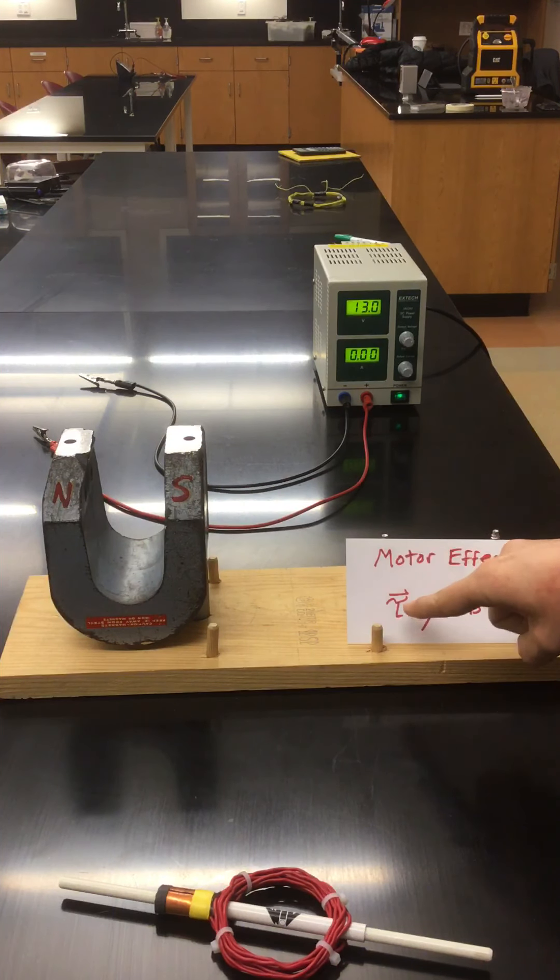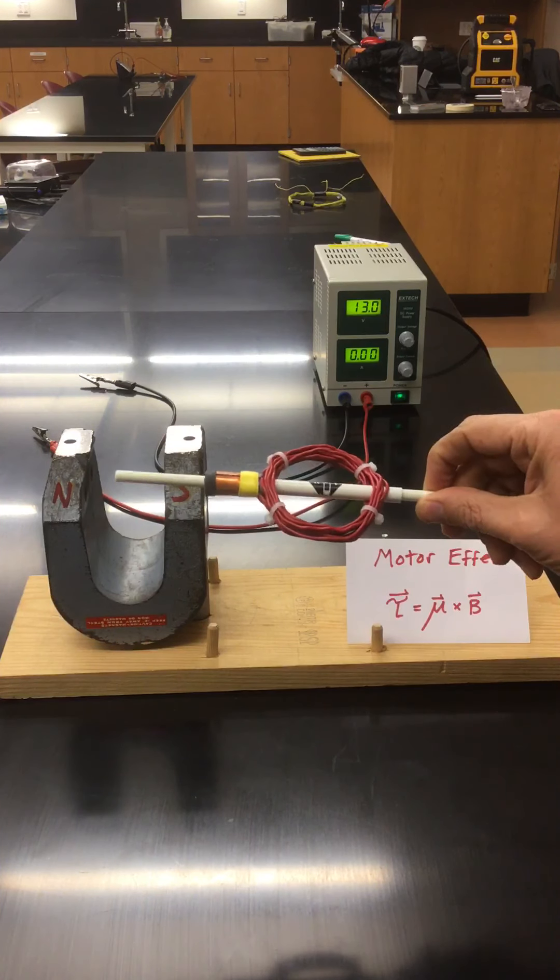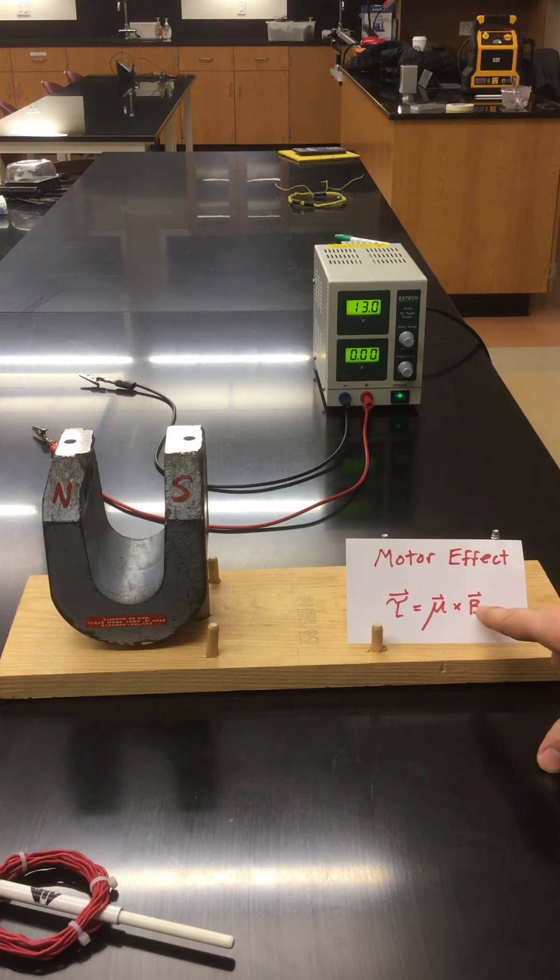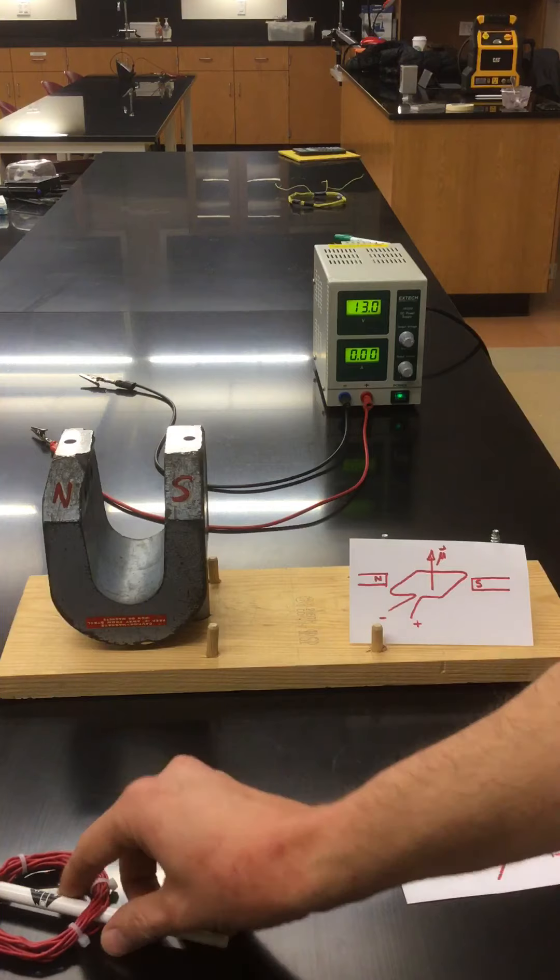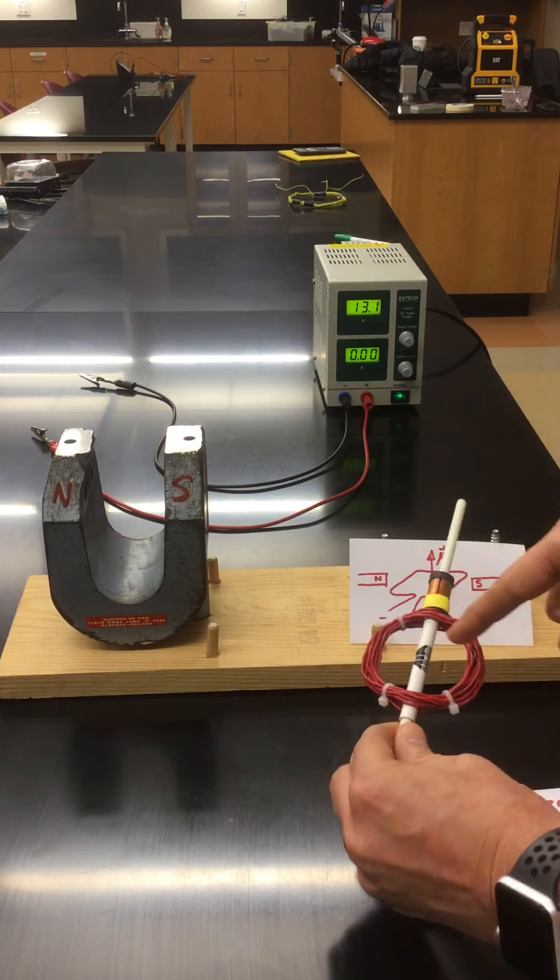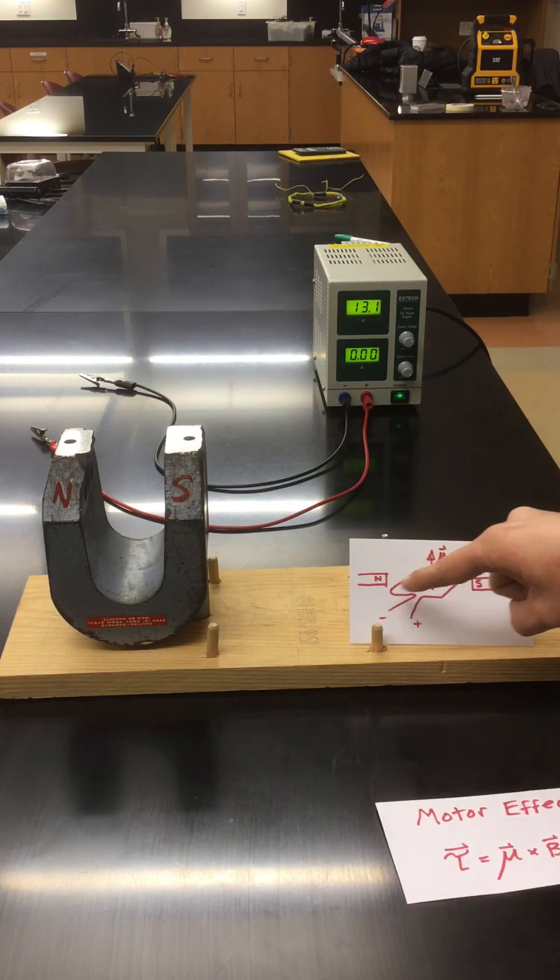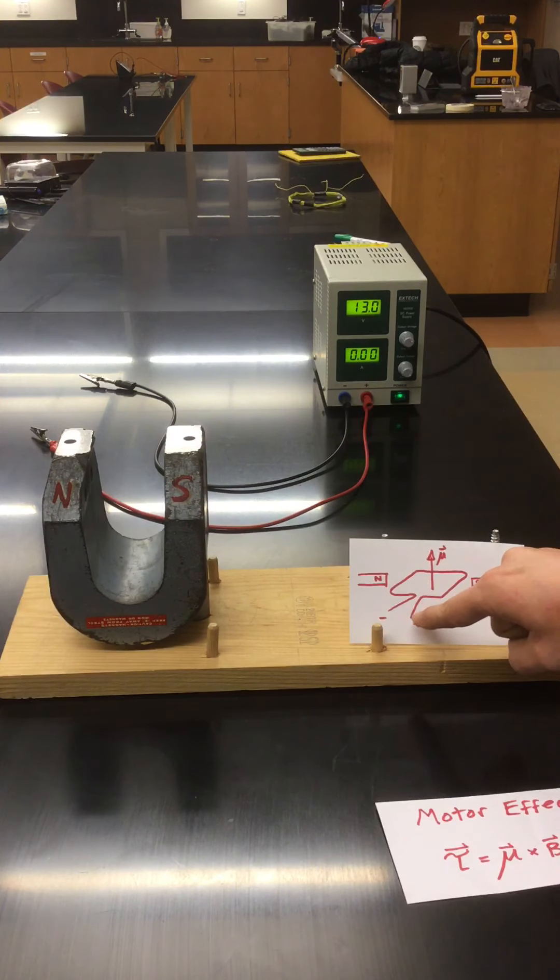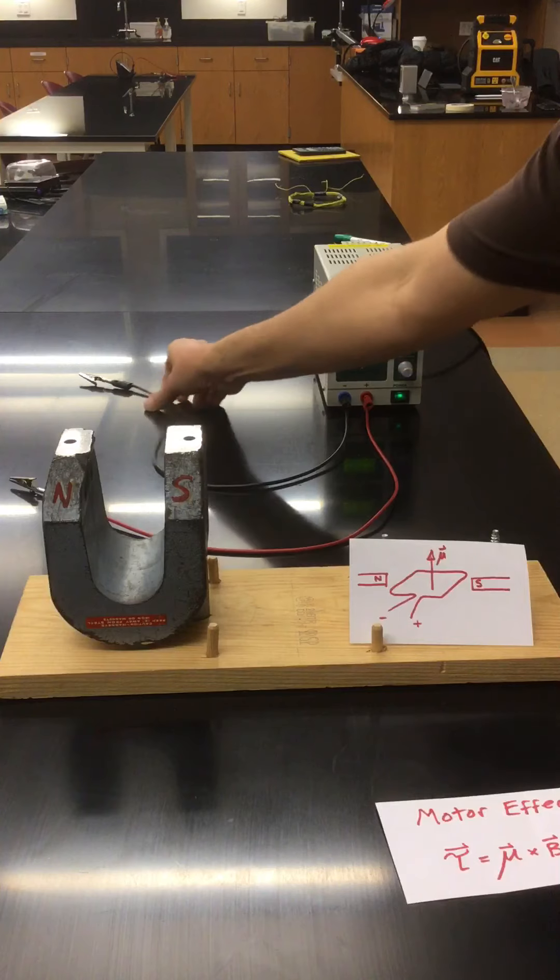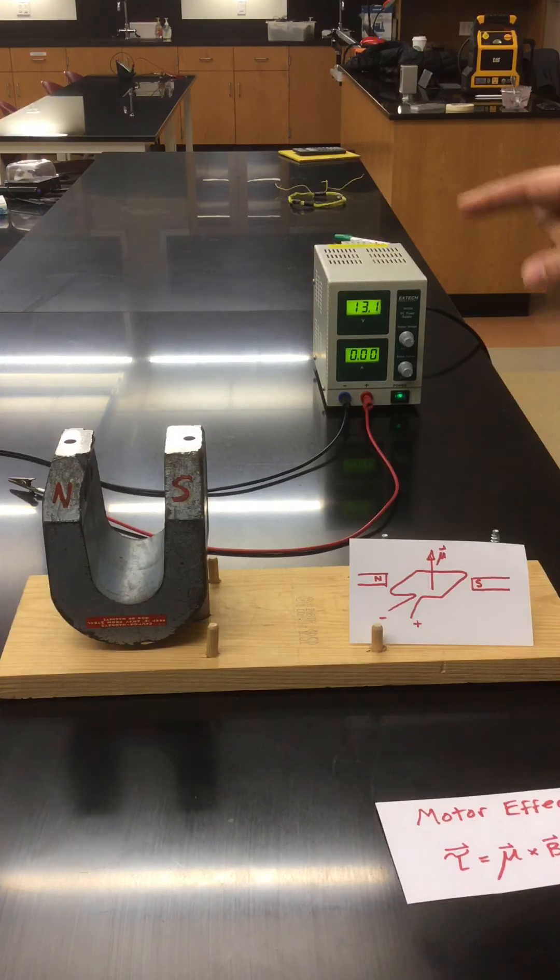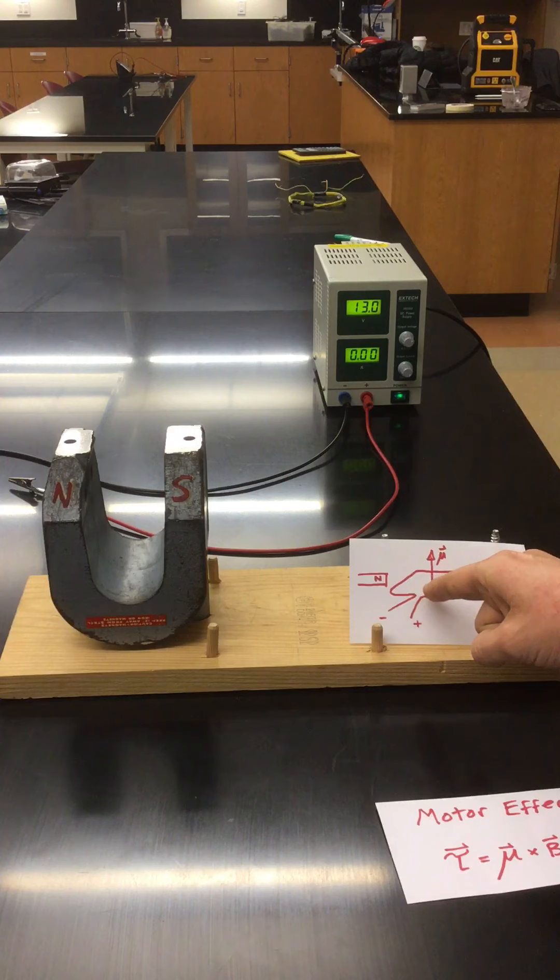Okay. So again, the torque on the current loop was the cross product of the magnetic dipole moment and the magnetic field. Let me picture it like this. Even though our loop was wound around several times, if we just had one single winding, it would also get a twist. If this side was momentarily connected to the positive brush and this side of the loop was connected to the negative brush, then we would have a current that flows.